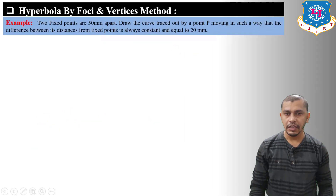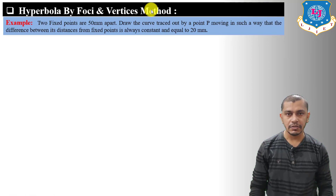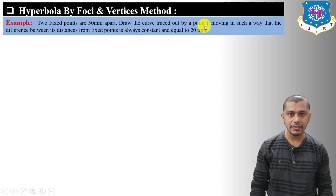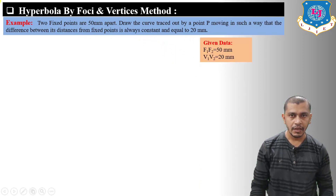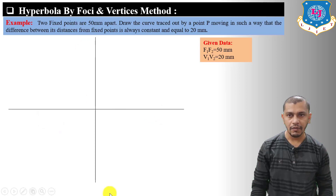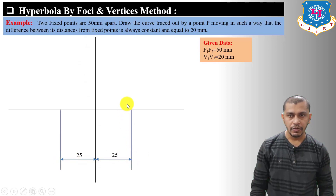Now let's move on to the foci and vertices method, also known as the arc of circle method to construct the hyperbola. Given: two fixed points (foci) are 50 mm apart; point P moves such that the difference between its distances from the two fixed points is always 20 mm. The foci F1 and F2 are 50 mm apart; the two vertex points V1 and V2 are 20 mm apart. Draw horizontal and vertical lines; measure 25 mm on each side from the vertical line and mark focus points F1 and F2; measure 10 mm on each side for vertex points V1 and V2.